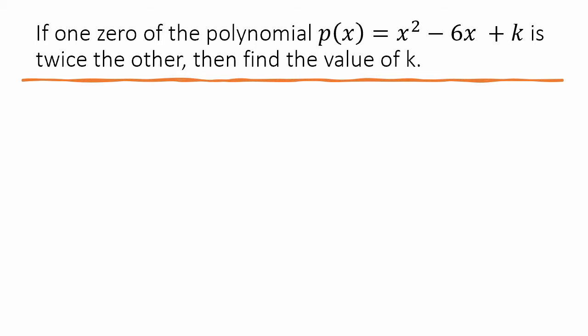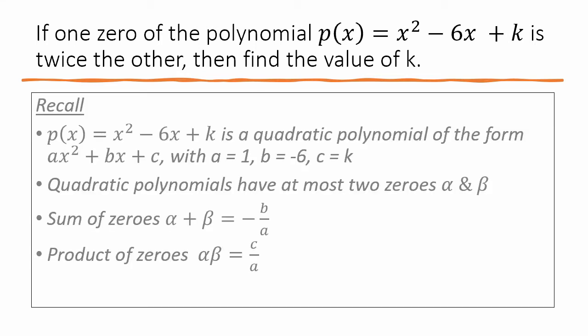Let us remember what we need to know. p(x) = x² − 6x + k is a quadratic polynomial, because the highest power is 2. When the highest power is 2, it is a quadratic polynomial. The general form of a quadratic polynomial is ax² + bx + c.